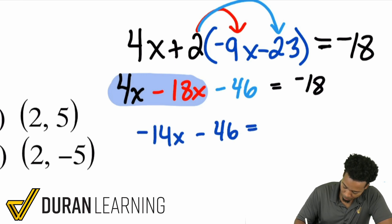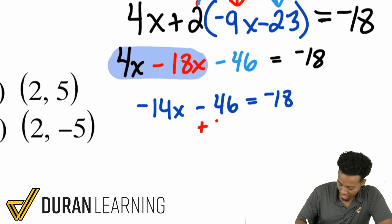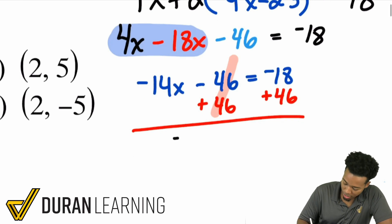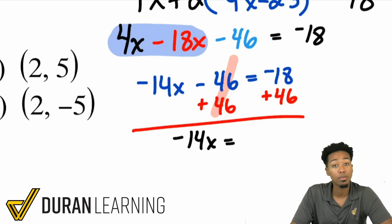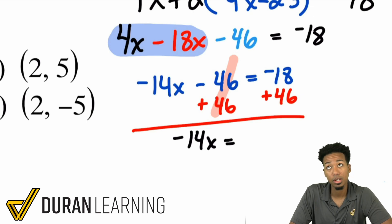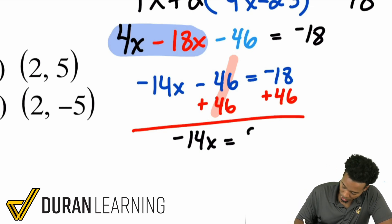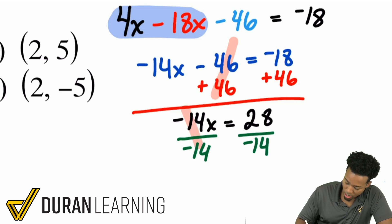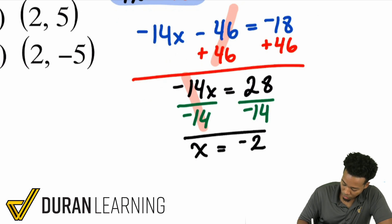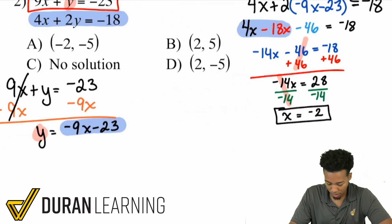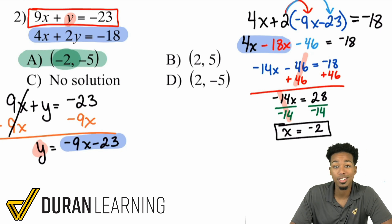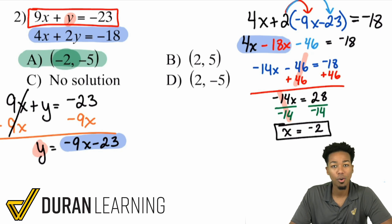We have negative 14X minus 46 equals negative 18. Add 46 to both sides: negative 14X equals 28. Divide both sides by negative 14, giving us X equals negative 2. Looking at the answer choices, the only answer with negative 2 for X is right there — so we're done. No extra work needed; we don't have to solve for Y.